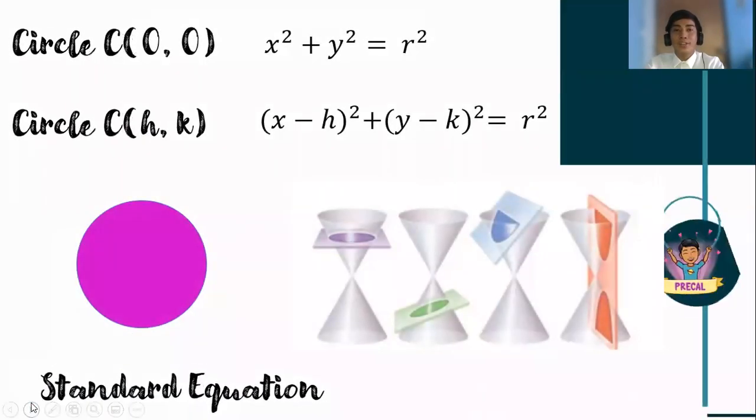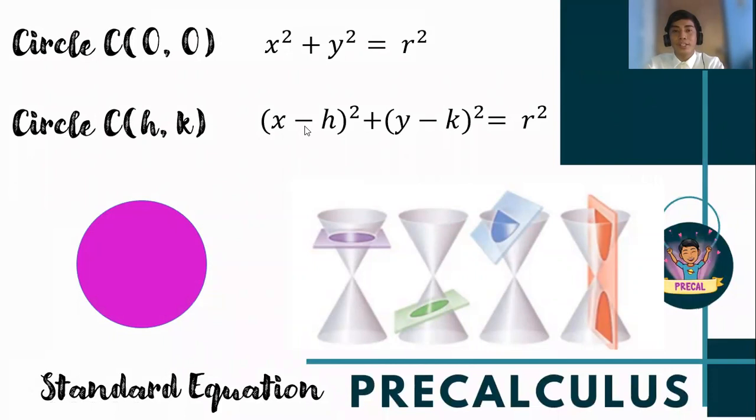Now, let us recall the standard equation of a circle center at (0,0). So remember this one, x² + y² = r². For circles with center at (h,k), it now have an x-h part and a y-k part. So the standard equation is (x-h)² + (y-k)² = r².